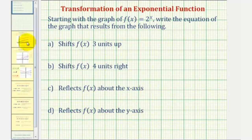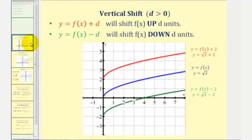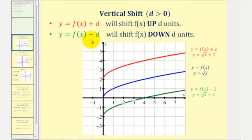For a quick review of vertical shifts: when D is greater than zero, y equals f of x plus D would shift f of x up D units, and y equals f of x minus D would shift f of x down D units.